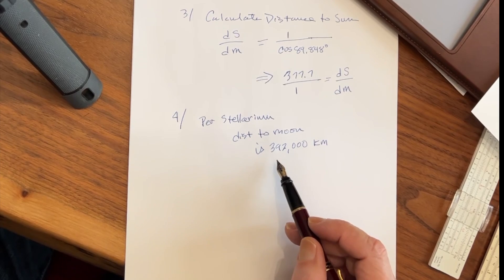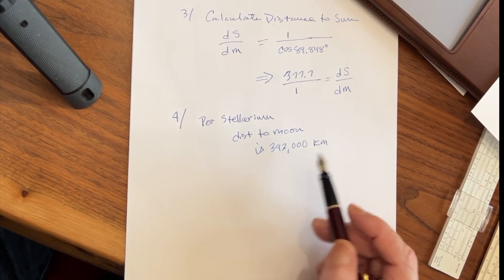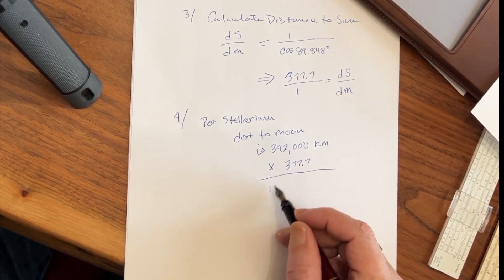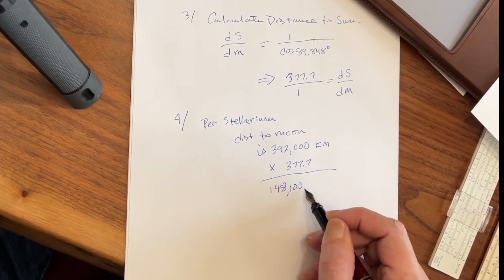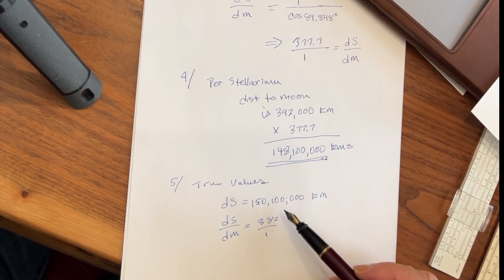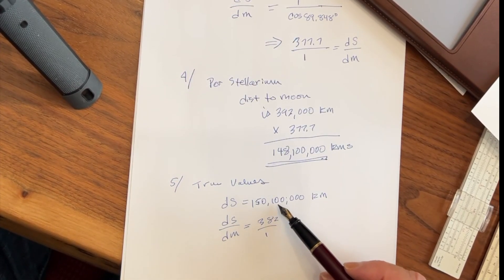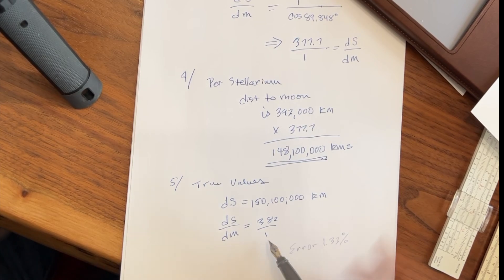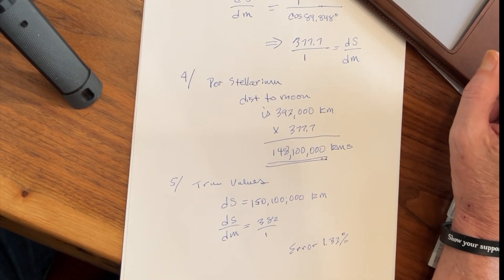Let's do the math and find out what this means in terms of the actual distance between the Earth and the Sun. Per Stellarium, today's distance to the Moon is 392,000 kilometers. Multiplying that by 377.7 gives us 148,100,000 kilometers. The true distance to the Sun today is 150,100,000 kilometers, and the true ratio of the distance to the Sun over the distance to the Moon is 382 to 1. That gives us an error of just 1.33% — hail Sagan.